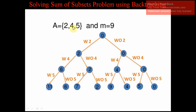From these nodes we move to the next element, which is 5. Left branches are with 5 and right branches are without 5. From node 6: with 5, 6 plus 5 gives 11; without 5, 6 plus 0 gives 6. From node 2: with 5, 2 plus 5 gives 7; without 5, 2 plus 0 gives 2. This completes the left subtree.